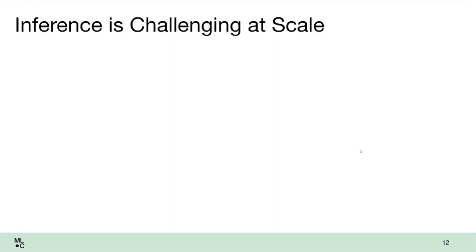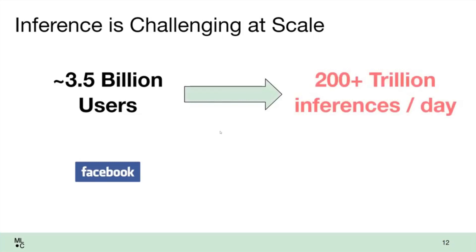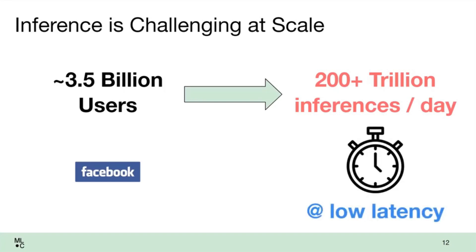Inference is really how we put things into production. It's not computationally demanding in itself, but it is often at scale. Facebook has about 3.5 billion users, which translates to 200 trillion inferences per day — over 2 billion inferences per second. We need to do this at low latency. In an automotive context, a general acceptable reaction time is about 200 milliseconds, which means inference really needs to be done in about 50 milliseconds — a twentieth of a second for all inference.